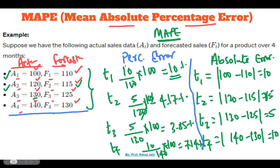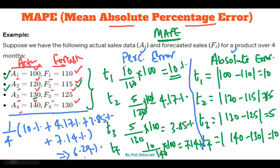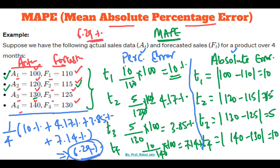Now finally we come to the mean absolute percentage error. The total number of observations is 4, and the sum of all percentage errors is 10 percent plus 4.17 percent plus 3.85 percent plus 7.14 percent. The final answer gives us 6.29 percent. So we can conclude that this forecasting model has 6.29 percent fluctuation while forecasting the sales data.